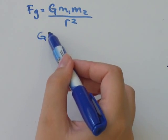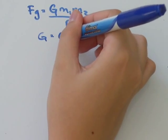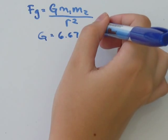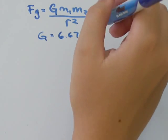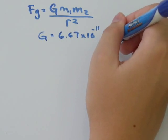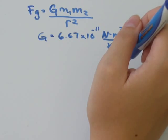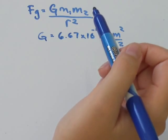G is a constant, which means it never changes. It is always equal to 6.67 times 10 to the power of negative 11, and the units are Newton times meters squared over kilograms squared. So that is the same in every question you'll do.